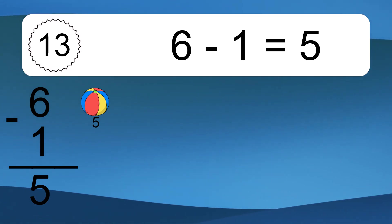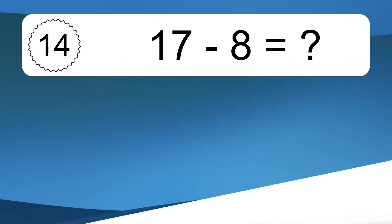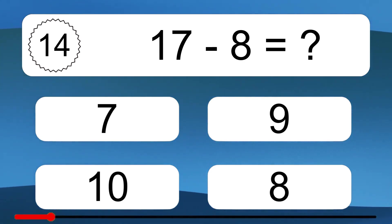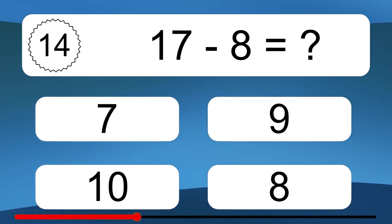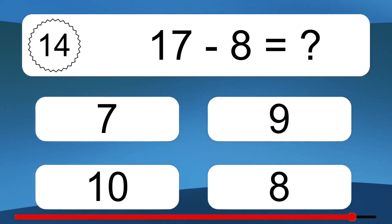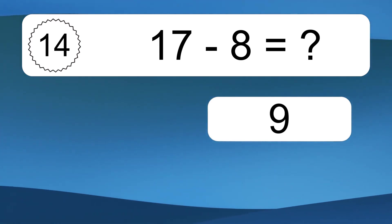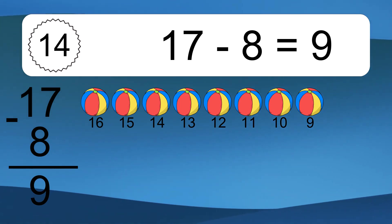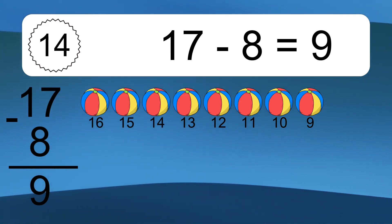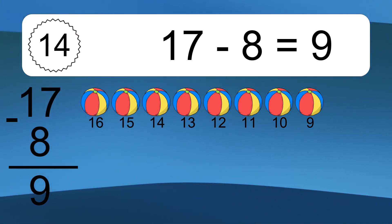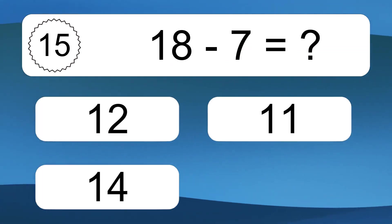6 minus 1 equals what? 6 minus 1 equals 5. Let's count it: 5. 17 minus 8 equals what? 17 minus 8 equals 9. Let's count it: 16, 15, 14, 13, 12, 11, 10, 9.